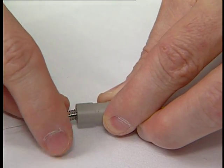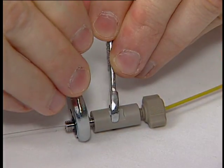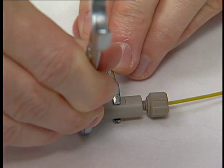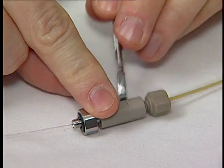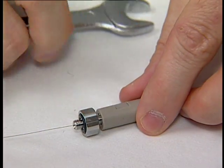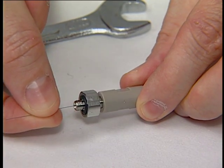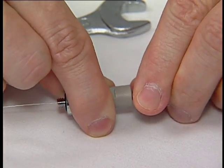Press the capillary into the union until it can go no further and tighten the coupling nut to the LC union just until snug. Gently pull on the capillary to be sure it remains in place. Remove the peak tubing from the union.